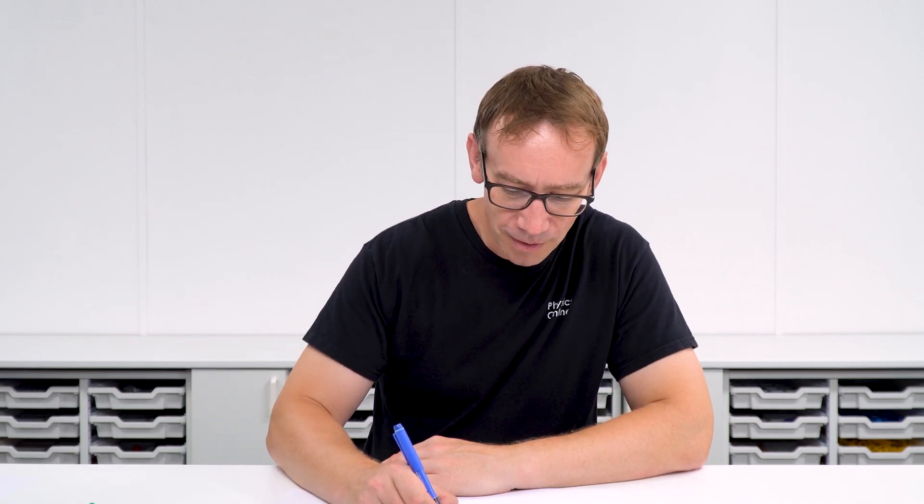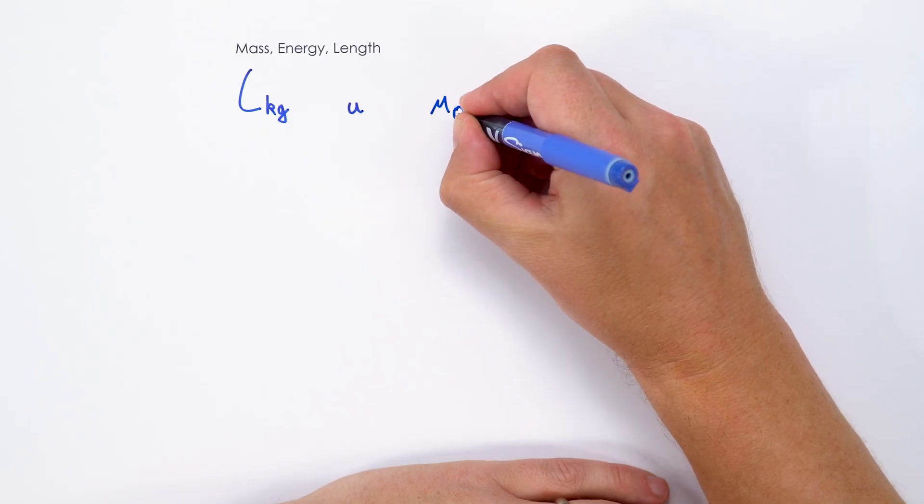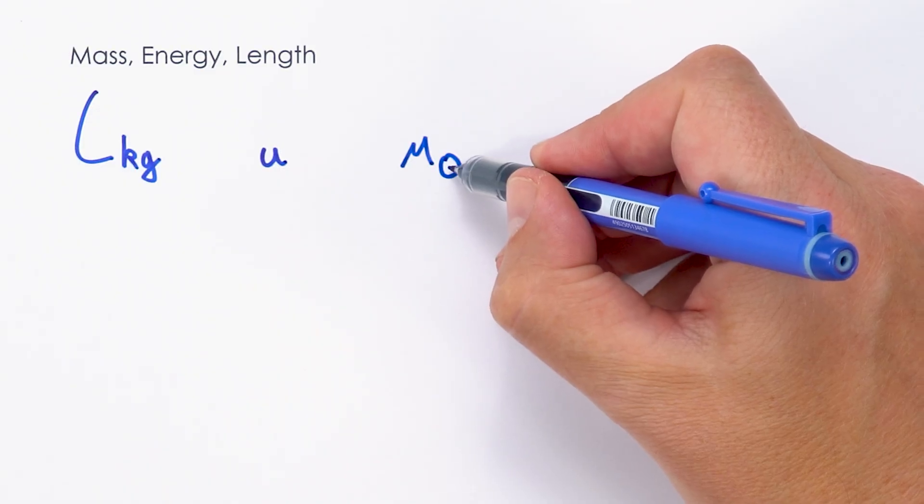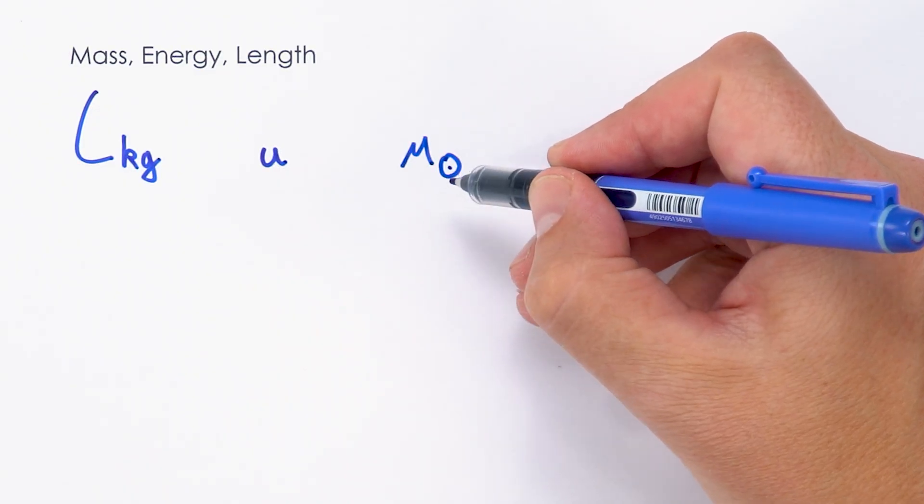But of course sometimes we want to look at really big things. Another way we can measure mass might be in solar masses. I'm just going to use a capital M with a circle with a dot in it to represent our sun.